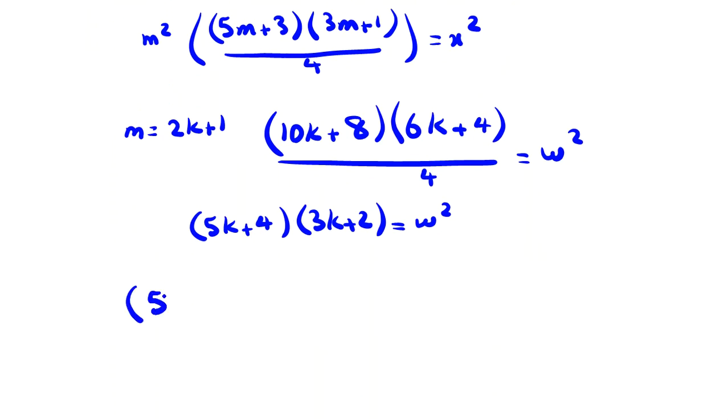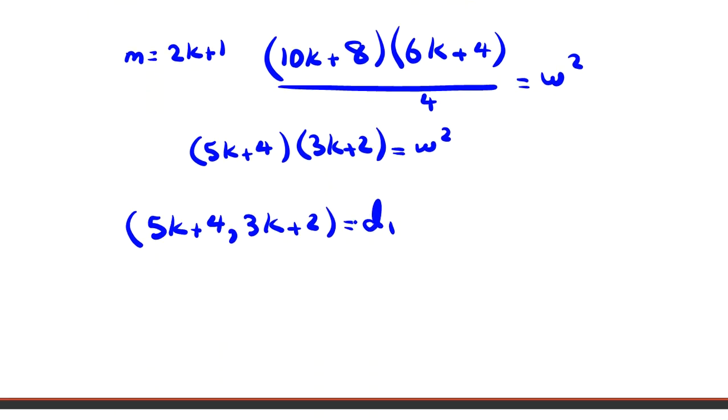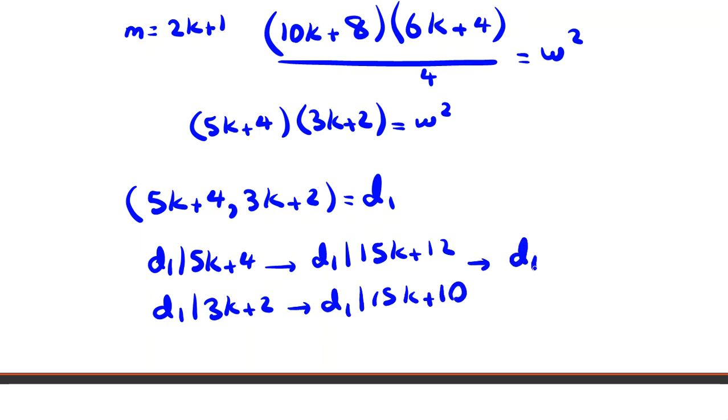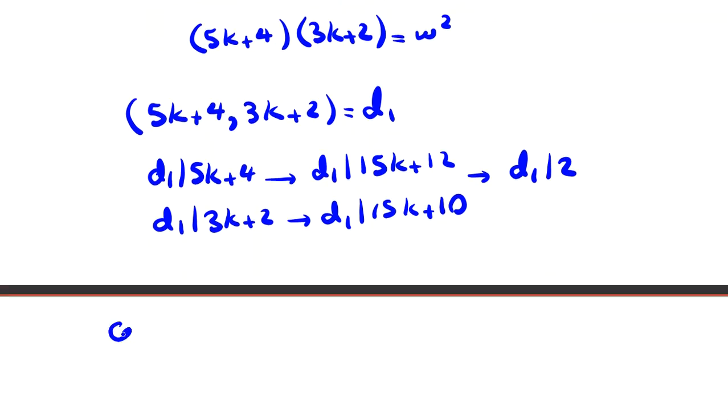Consider their gcd, 5k+4 and 3k+2, as d₁. d₁ divides 5k+4 and d₁ divides 3k+2. Multiply by 3: 15k+12 and 15k+10. So d₁ divides 2. The only possible case is that 2 divides these two things. So we consider d₁ is 1 or d₁ is 2.